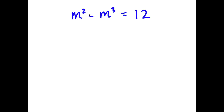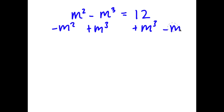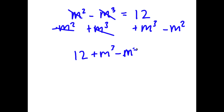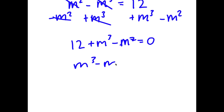In this problem, I have m squared minus m to the power of 3 is equal to 12. To solve this, I'm going to add m to the power of 3 on both sides and subtract m squared on both sides, so these terms cancel. Now I have 12 plus m to the power of 3 minus m squared is equal to 0, which I'll rewrite as m to the power of 3 minus m squared plus 12 is equal to 0.